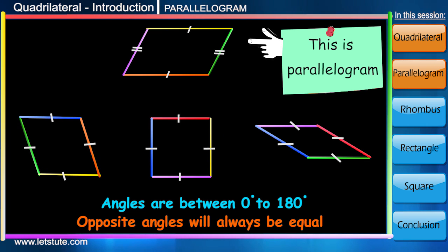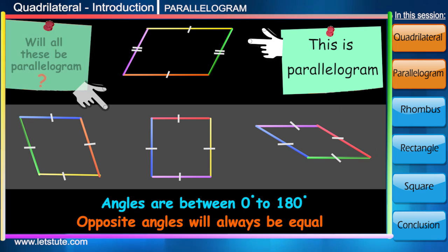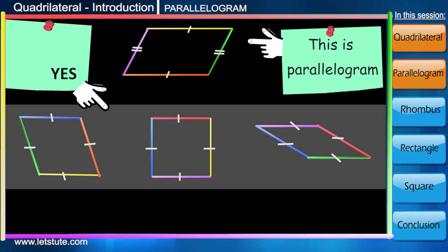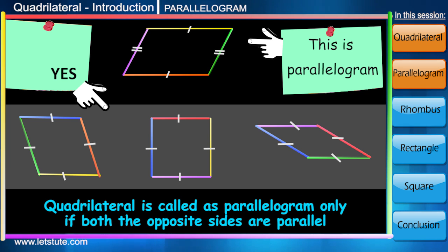If not only opposite sides, but also all the sides are equal in length, will it be a parallelogram? The answer is yes, why not? A quadrilateral is recognized as a parallelogram only when opposite sides are parallel.